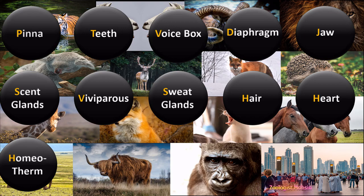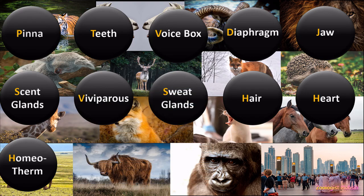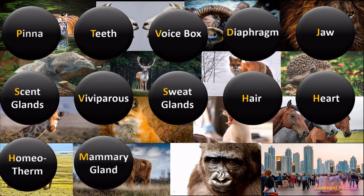The next feature is homeothermy. Mammals are homeotherms, meaning they can maintain their internal body temperature, which is necessary for their enzymes to function. For example, polar bears can maintain their internal body temperature even in conditions of minus 50 or minus 60 degrees.